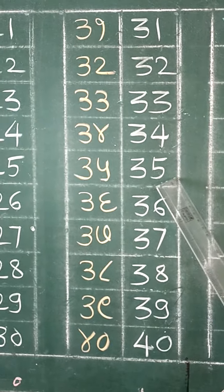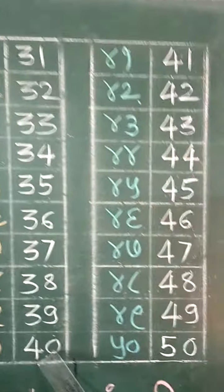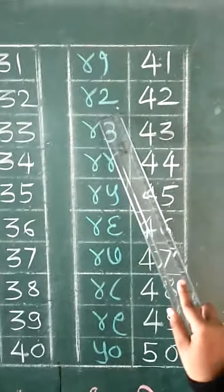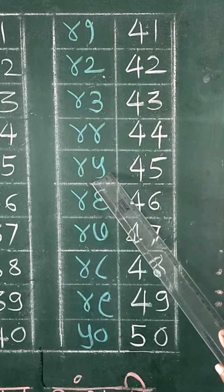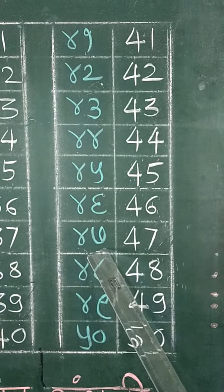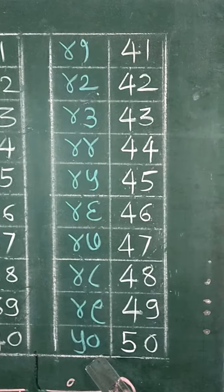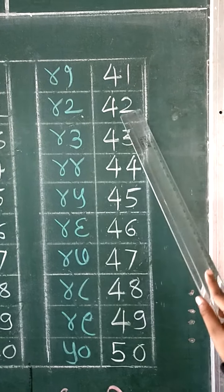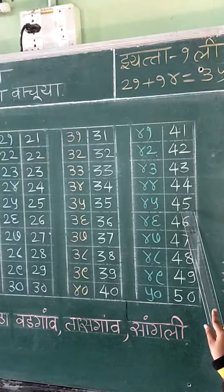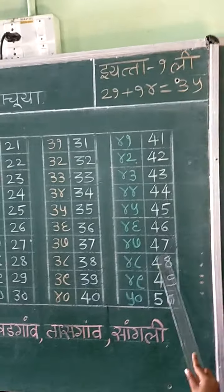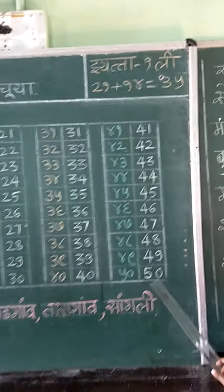34, 35, 36, 37, 38, 39, 40, 41, 42, 43, 44, 45, 46, 47, 48, 49. Forty-seven, forty-eight, forty-nine, fifty.